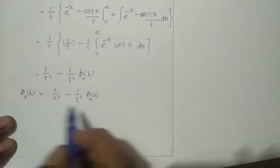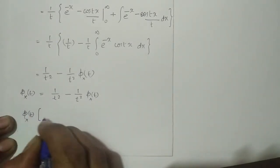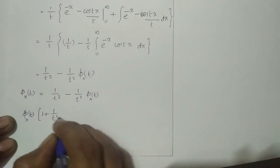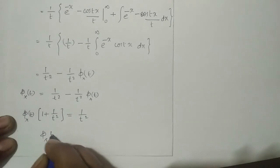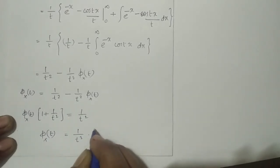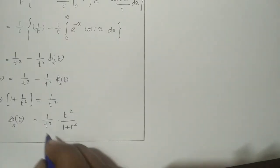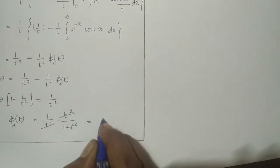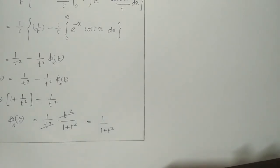Taking the φ_X(t) term to the left-hand side: φ_X(t) times (1 + 1/t²) = 1/t². Therefore φ_X(t) = (1/t²) × (t²/(1 + t²)), which simplifies to 1/(1 + t²). This is the characteristic function of the standard Laplace distribution.